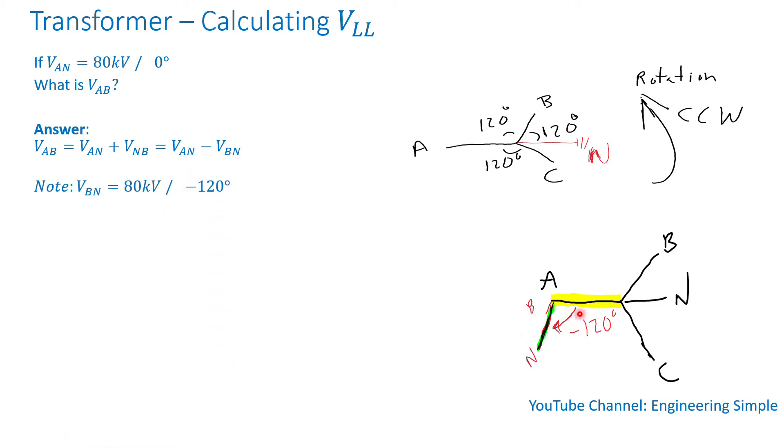And like I said earlier, VBN is just 80 kV with an angle of minus 120 degrees. What I'm saying is VBN is magnitude-wise equal to VAN, however VBN lags VAN by 120 degrees.